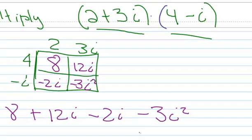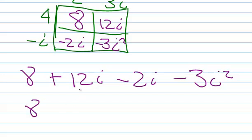Okay, let's do a little simplifying. There's the 8. Positive 12i minus 2i, that's going to be a positive 10i.